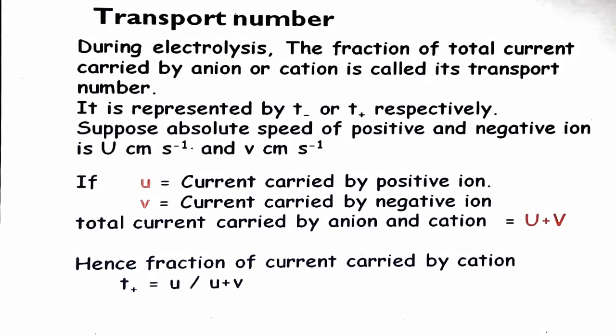Suppose the absolute speed of positive and negative ions is U centimeters per second and V centimeters per second, where U is for positive and V for negative. Then U and V represent the current carried by the positive ion and negative ion respectively. So the total current carried by anion and cation is equal to U plus V. Hence the fraction of current carried by the cation, T-plus, equals U divided by U plus V.